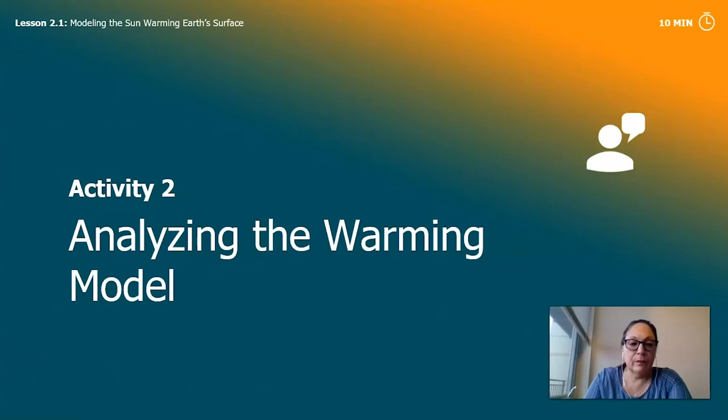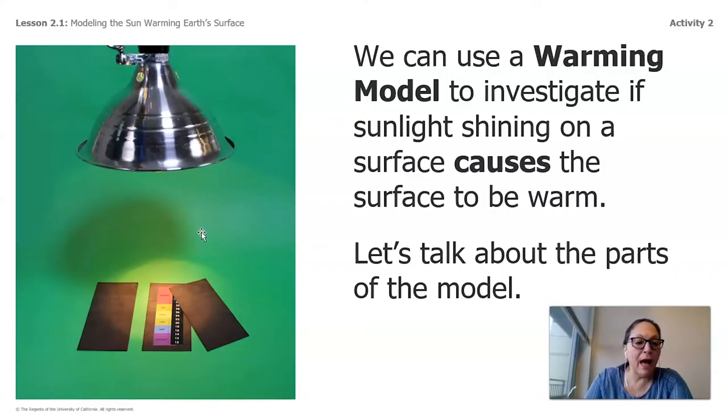So we're going to go ahead and analyze the warming model. So let's take a look at the picture that I have. Remember we talked about using a lamp and what it does when it's turned on. So we can use a warming model to investigate if sunlight shining on a surface causes the surface to be warm. Let's talk about the parts of the model. So here we have a lamp. Here we have, you see that the lamp, the light is on. We have, these are like rubber surfaces and we have thermometer. When you get the lesson with Science Kate, she's going to actually use the model and you're going to see how it works. As you guys know, some teachers are working from home and we don't have the equipment that we have in our classroom. But you guys are smart and we're going to use our imagination just like if we had in our classroom.